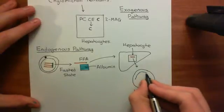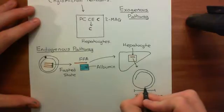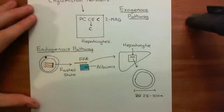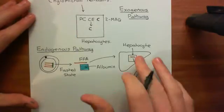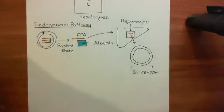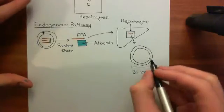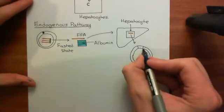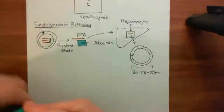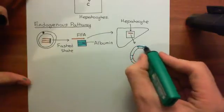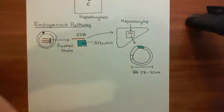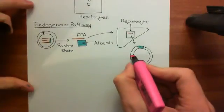As with all lipoproteins, the outer surface will be made up of a phospholipid monolayer, which is usually made up mainly of phosphatidylcholine or lecithin molecules — and of course the hepatocytes have a plentiful supply of that. Here is the phospholipid monolayer, and then within the monolayer, you have apolipoproteins. Let's color these apolipoproteins in and then discuss which apolipoproteins you generally find in very low-density lipoproteins.